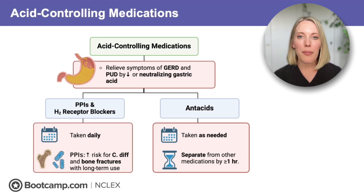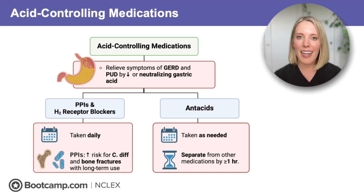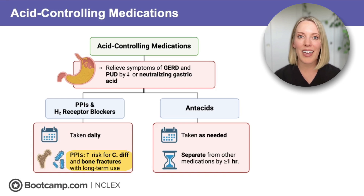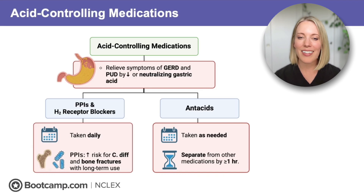Both of these medications deal with altering gastric acid — either suppressing it or neutralizing it. Anytime we alter gastric acid, we can end up with downstream effects. PPIs can increase the risk for C. diff and osteoporosis, and antacids have to be separated from other medications by at least an hour. Let's take a closer look at each medication and how they might show up on the NCLEX.